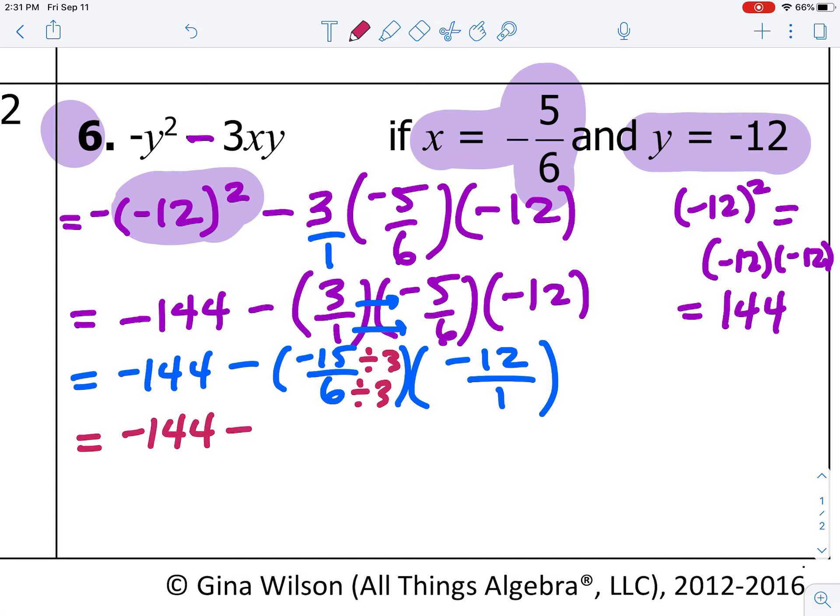So, I have negative 144. Then, I'm going to copy down this minus. I'm going to simplify this. Negative 15 divided by 3 is negative 5. Positive 6 divided by 3 is positive 2.